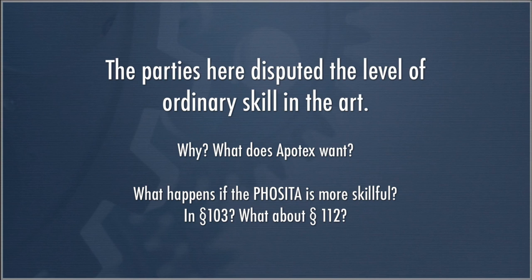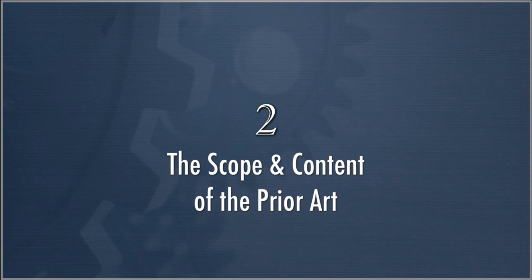This is a fact question. It can be decided by the judge, but in some cases it can be sent to the jury if the parties so request. So that's how to determine the person of ordinary skill in the art. Let's talk about what we mean by the scope and content of the prior art — our second Graham factor.